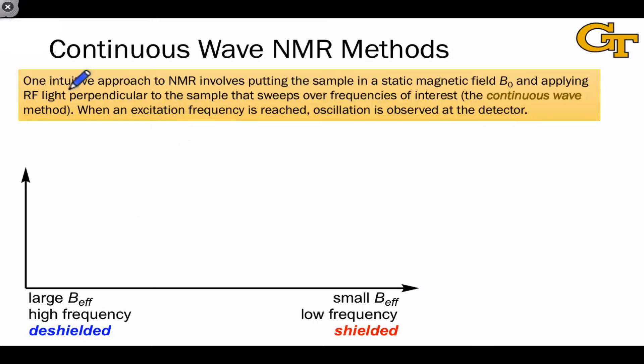All that said, the most intuitive approach to conducting an NMR experiment involves using specific wavelengths of radio frequency or RF light while keeping the sample in a static magnetic field. One way to obtain an NMR spectrum is to, for example, start at high-frequency radio waves.